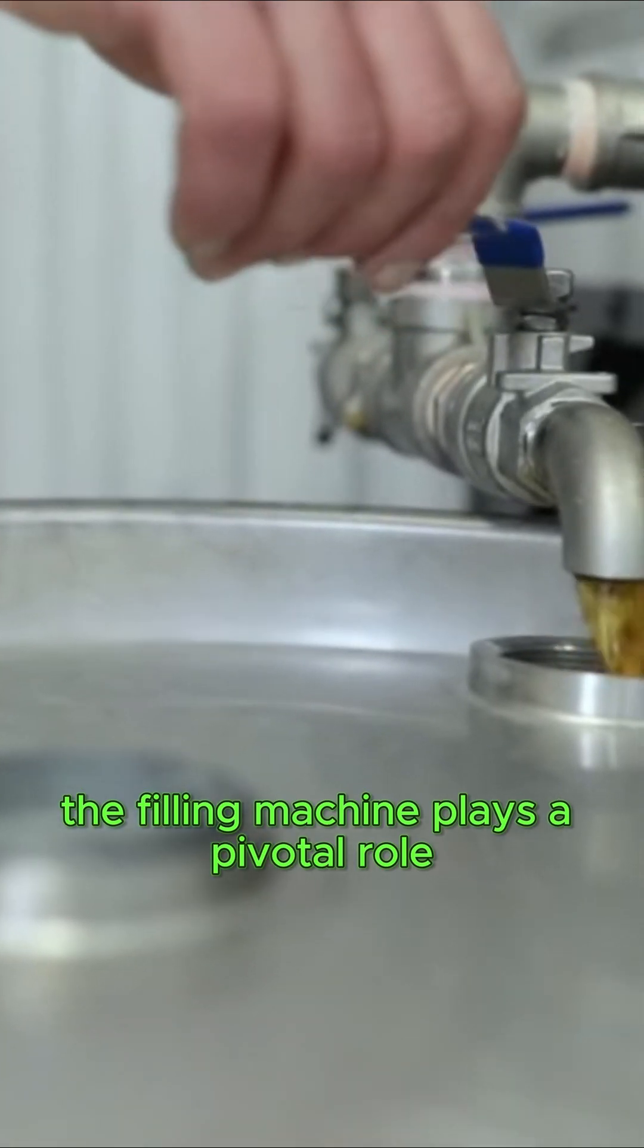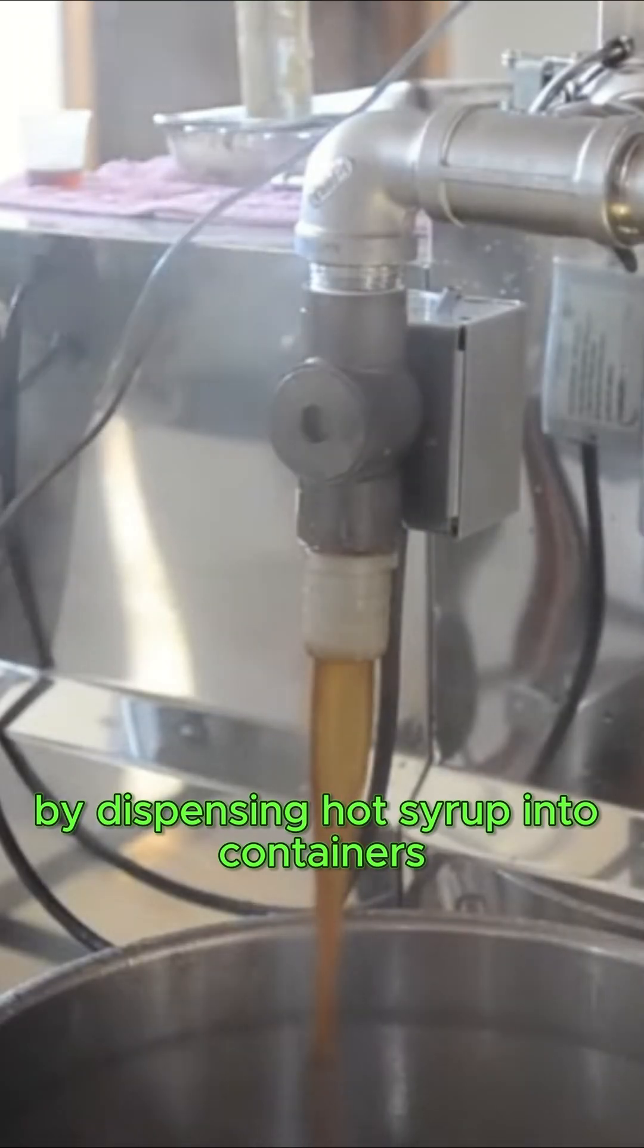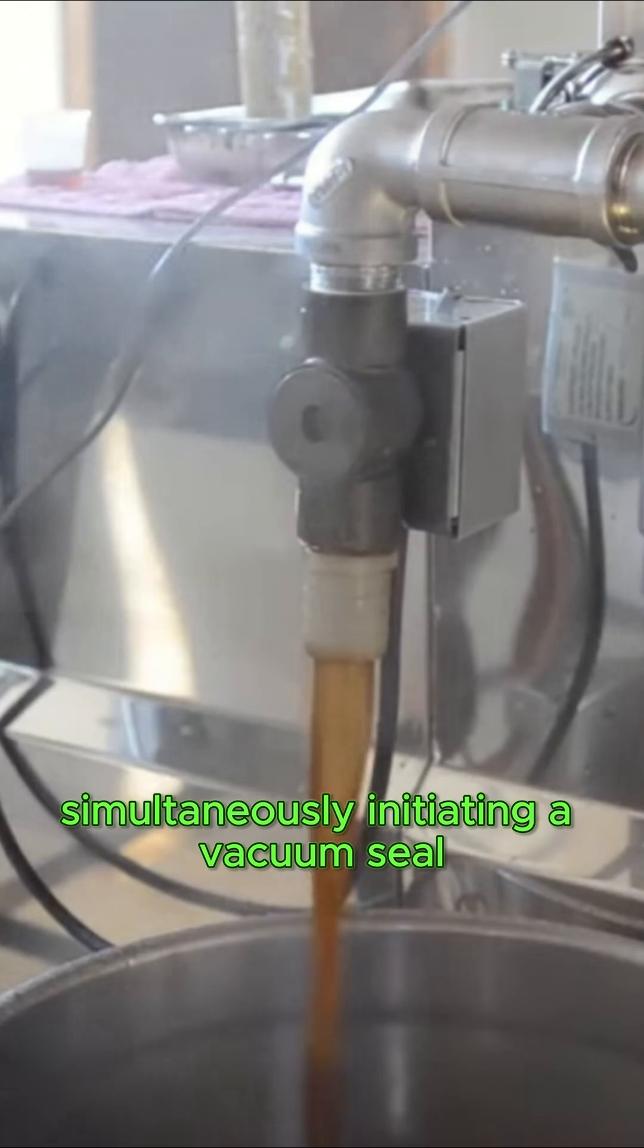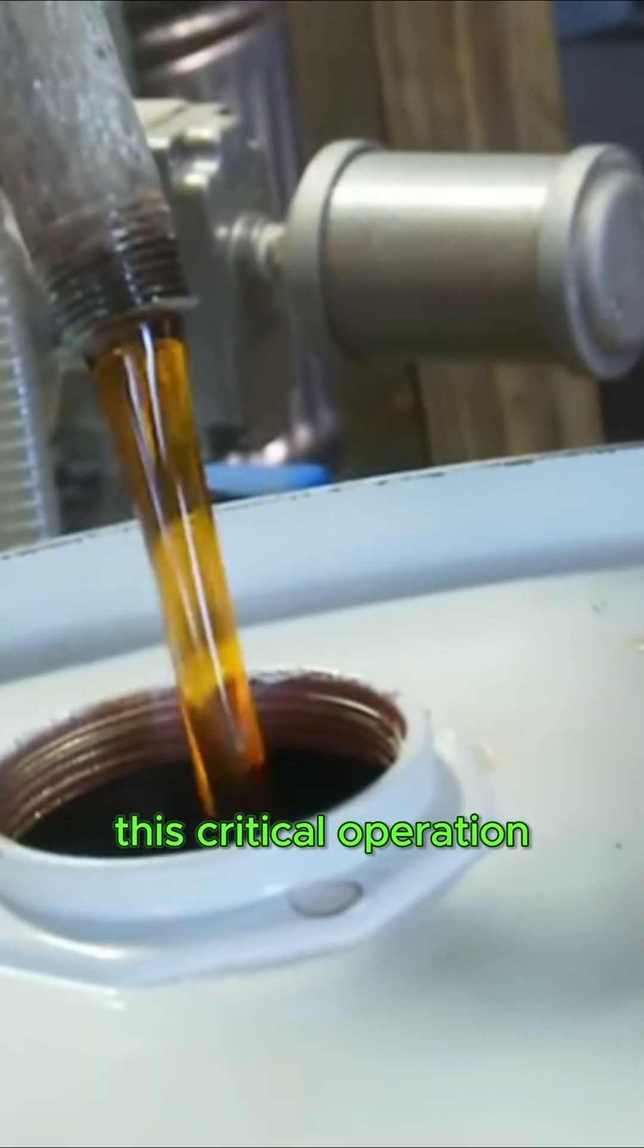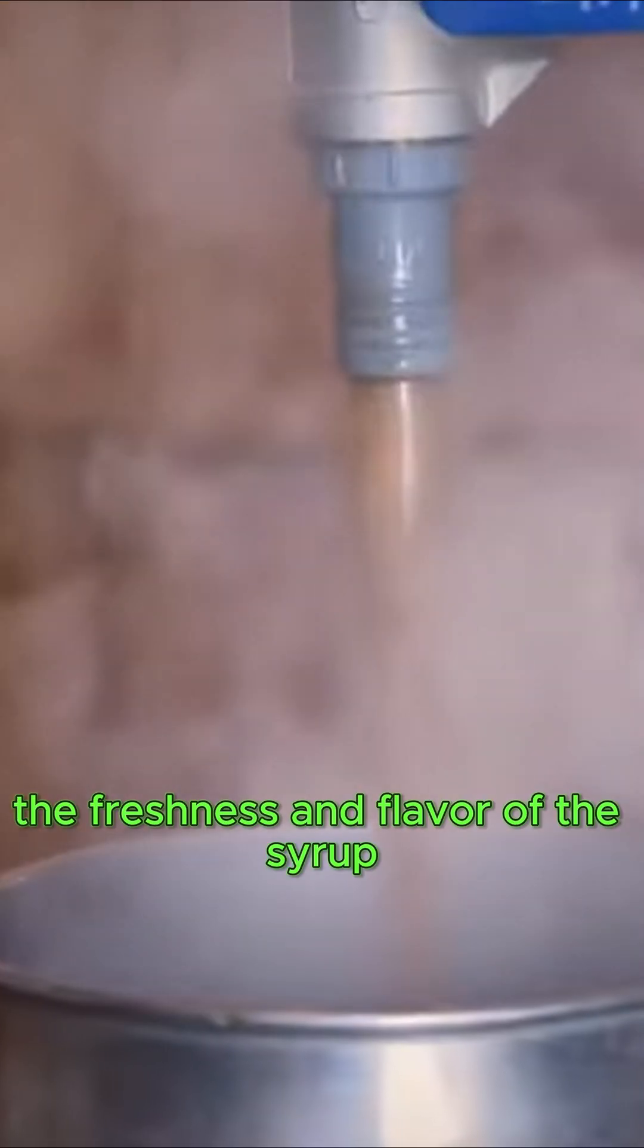The filling machine plays a pivotal role by dispensing hot syrup into containers, simultaneously initiating a vacuum seal. This critical operation ensures the preservation of both the freshness and flavor of the syrup.